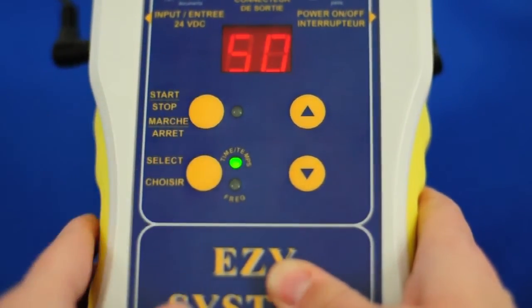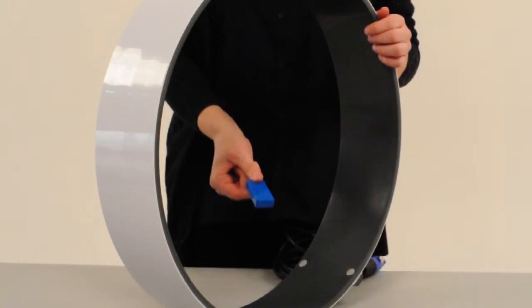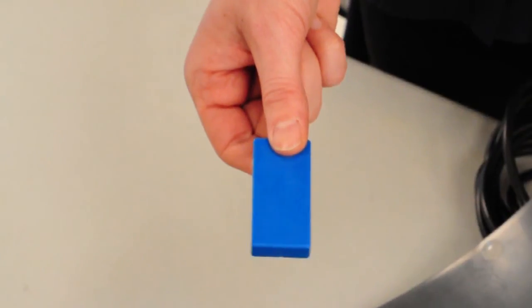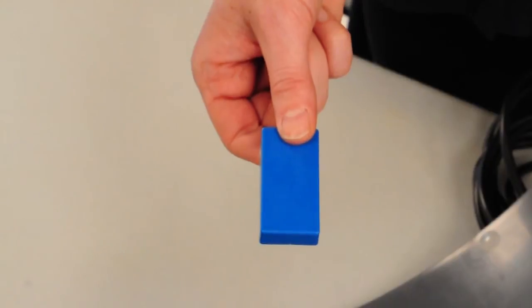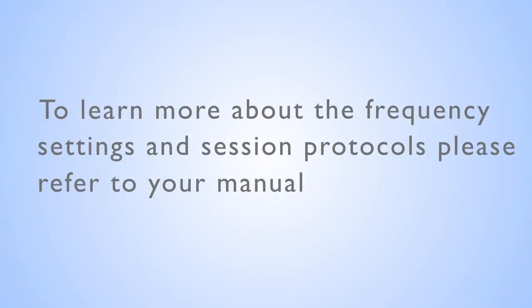Once you have set the time and frequency for your session, press the start button. This button also stops or pauses your session. To test your coil is working properly, take the magnet and hold it between your thumb and forefinger inside the coil. You should feel the frequency pulse in the fingers holding the magnet. If not, make sure your controller is on and you have started your session. For more troubleshooting tips, refer to your manual.